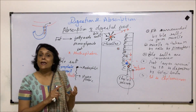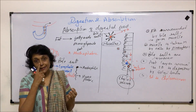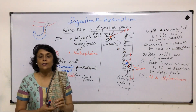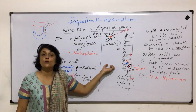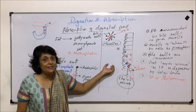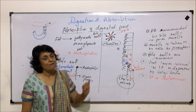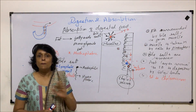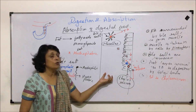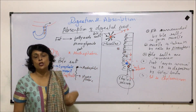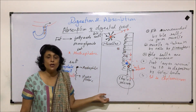So we have seen the absorption of carbohydrates in the form of glucose, fructose, and galactose, then amino acids, and whatever is produced from fat — that is glycerol, fatty acids, and monoglyceride fats. So this is complete absorption. After this we need to understand the assimilation part also, so we will take up assimilation later.